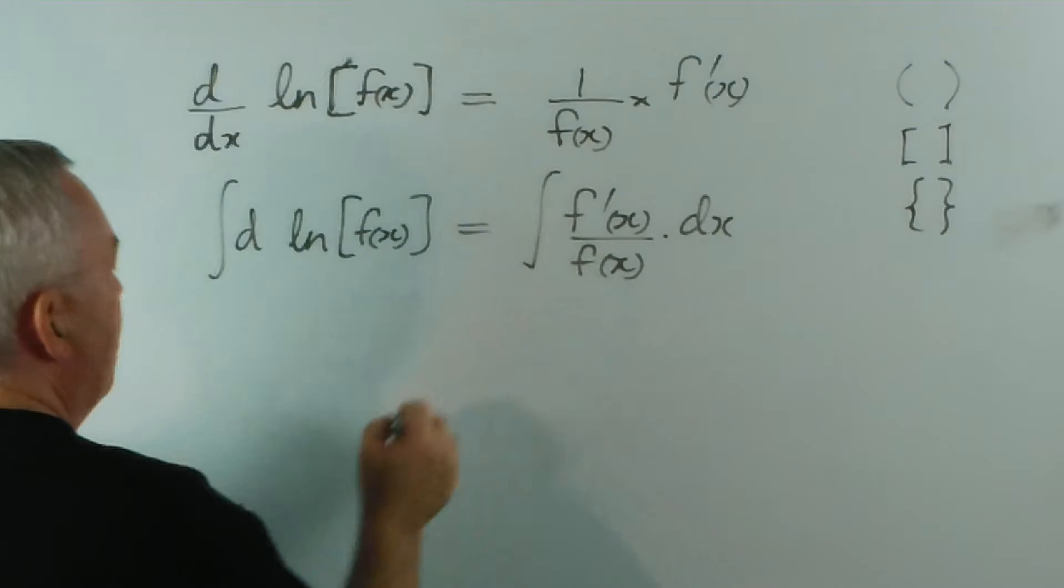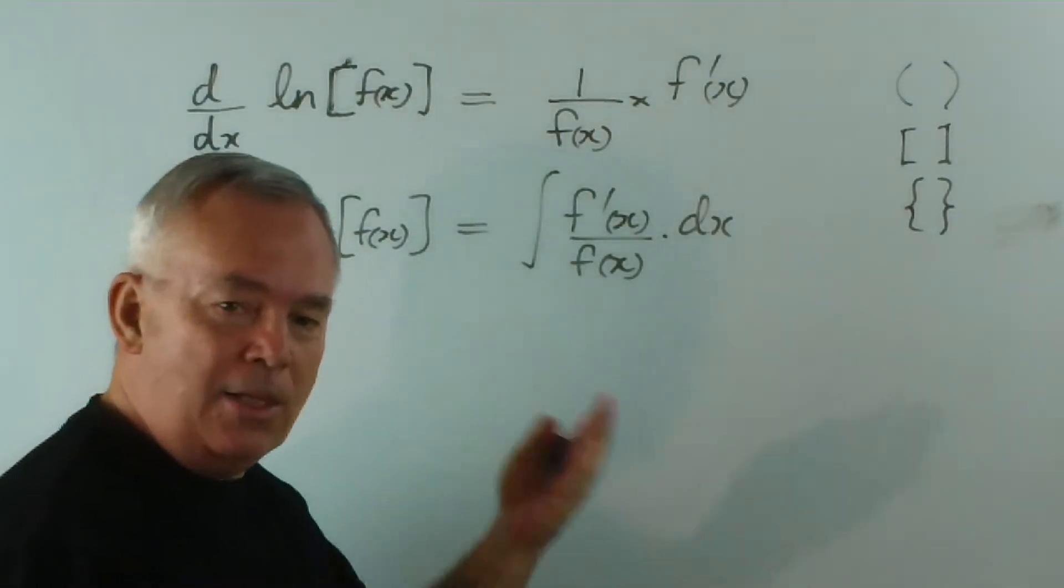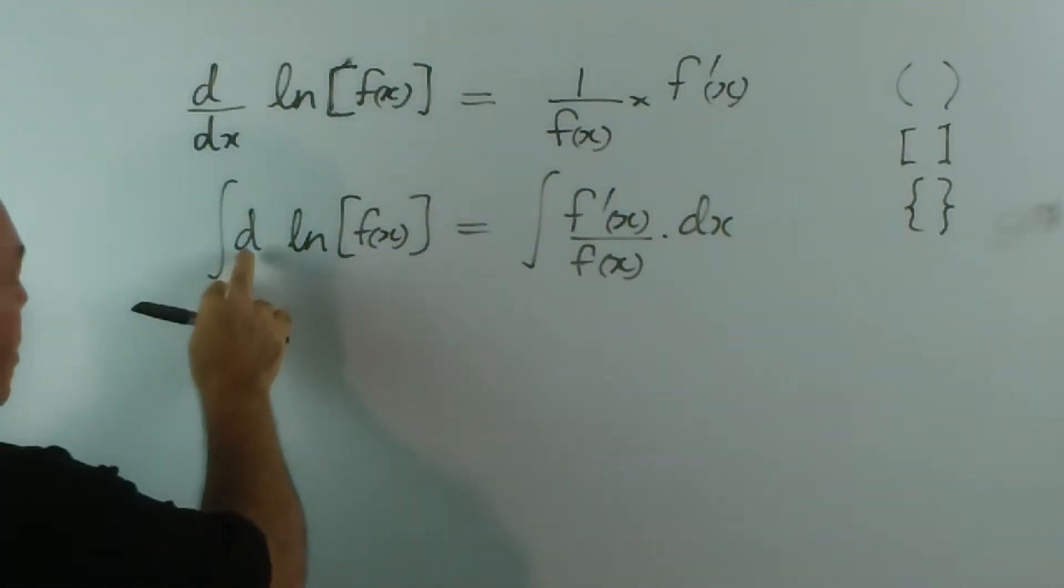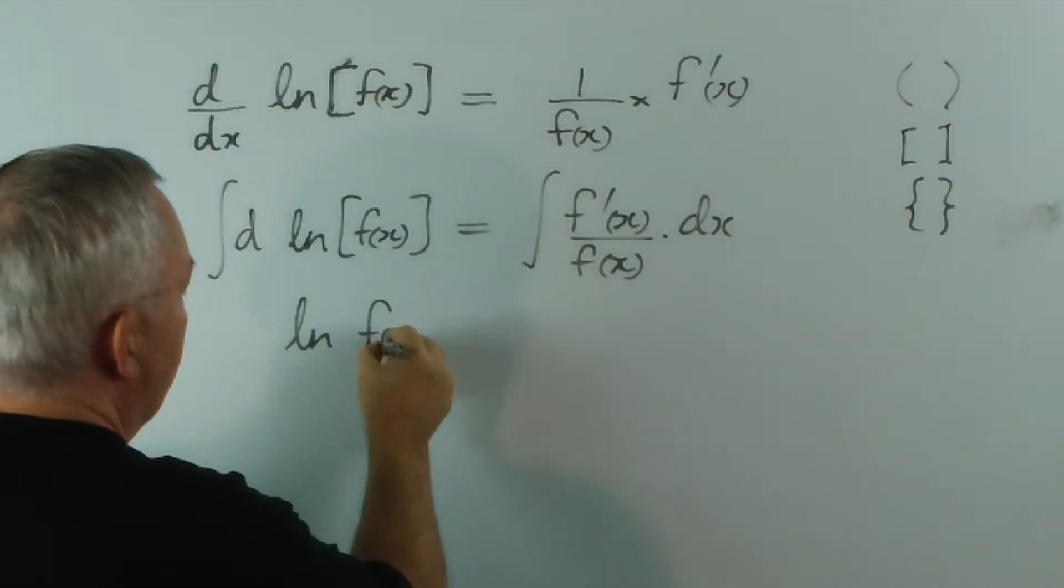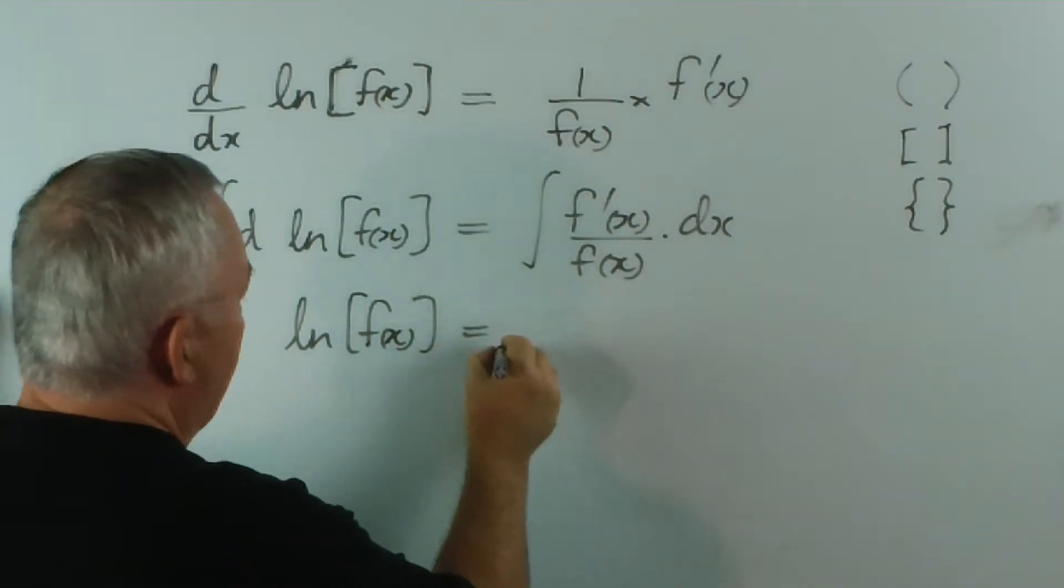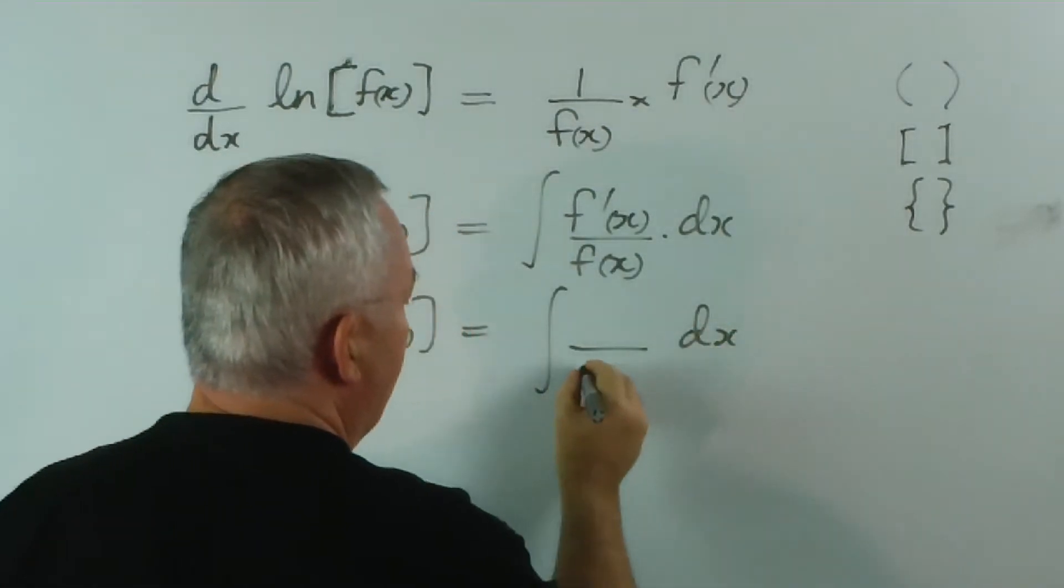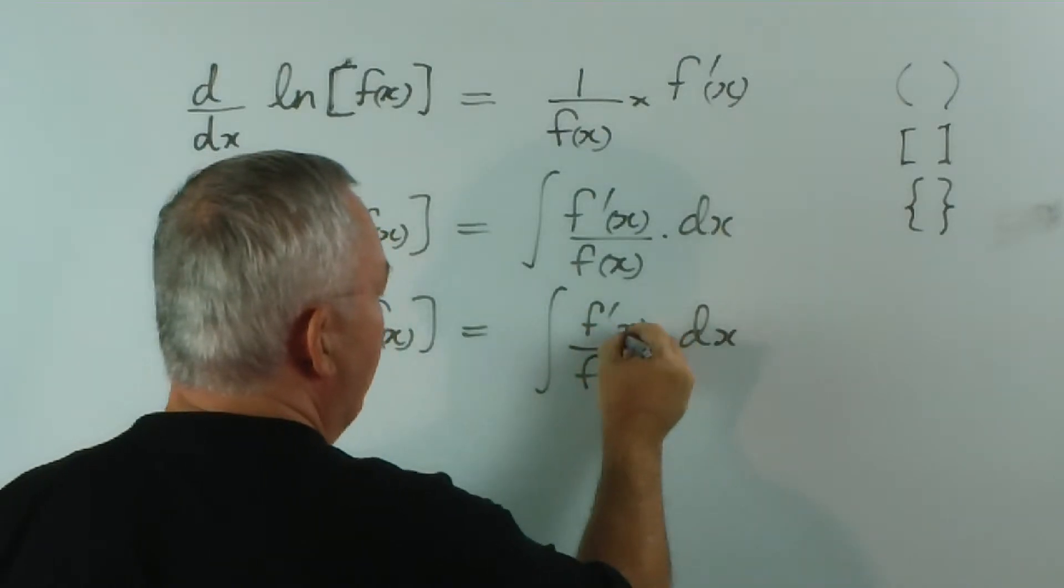Integrating both sides... Again, the integral is the anti-derivative. It's the inverse derivative. So these undo each other, and we're left with a logarithm of some function is the result of integrating this pattern, where we have some function on the bottom and its derivative on top.